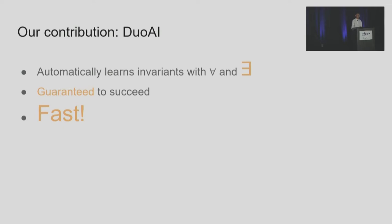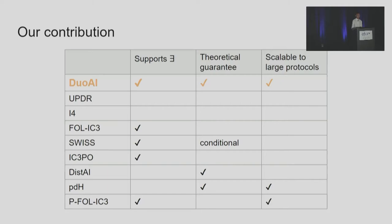In this paper, we present Dual AI, an automated invariant inference tool to verify distributed protocols. It learns invariants with both for-all and exists quantifiers, it's guaranteed to find a correct inductive invariant if one exists, and it runs fast in practice. Dual AI supports exists quantifiers, has a completeness guarantee, and can support large complex protocols — solving all three challenges that no existing tool can.